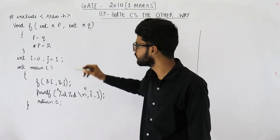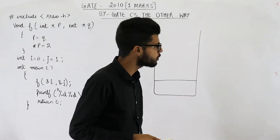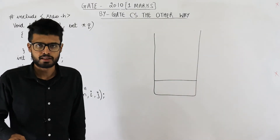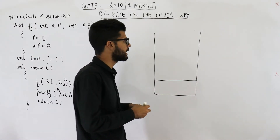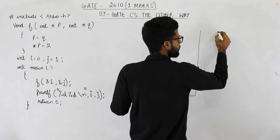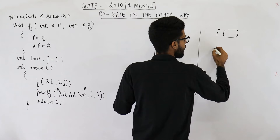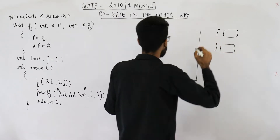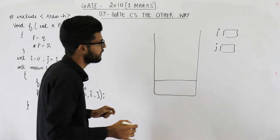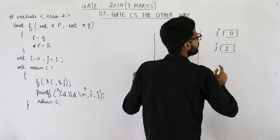In this code there are two global variables named i and j. Global variables will never be declared on the stack — they will be declared in the data section. So I'm declaring i and j in the data section. They are initialized with values 0 and 1, so i has a value 0 and j gets a value 1.